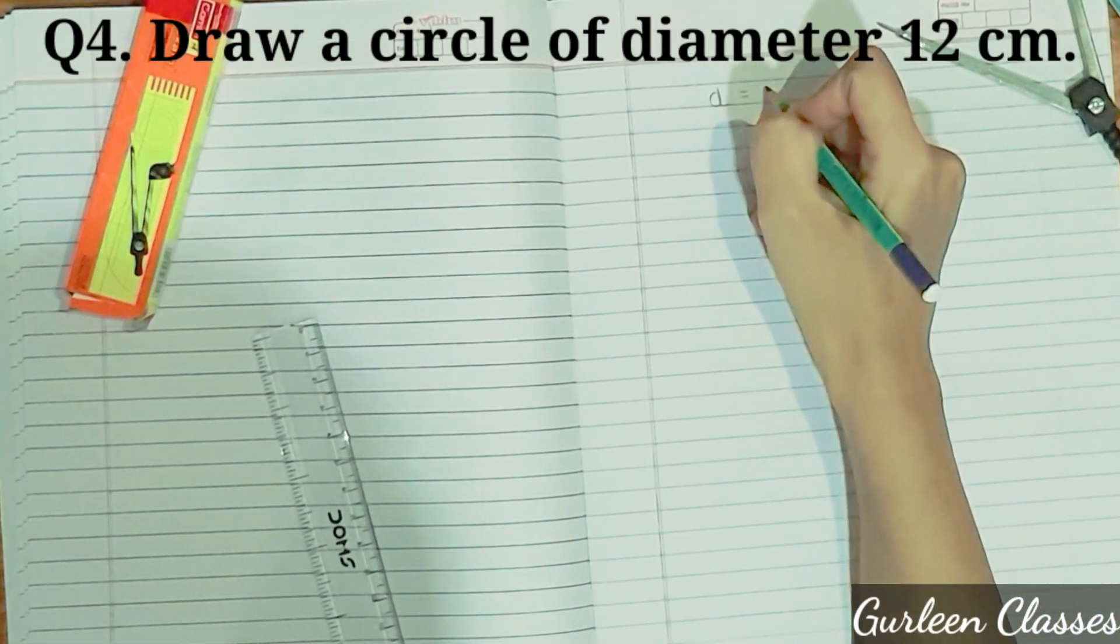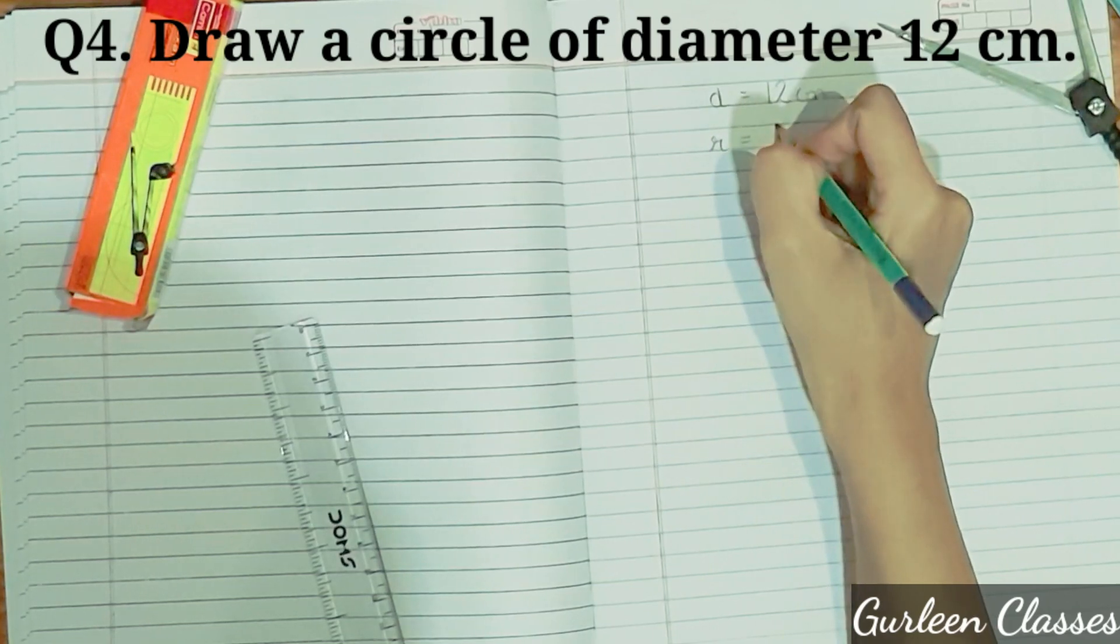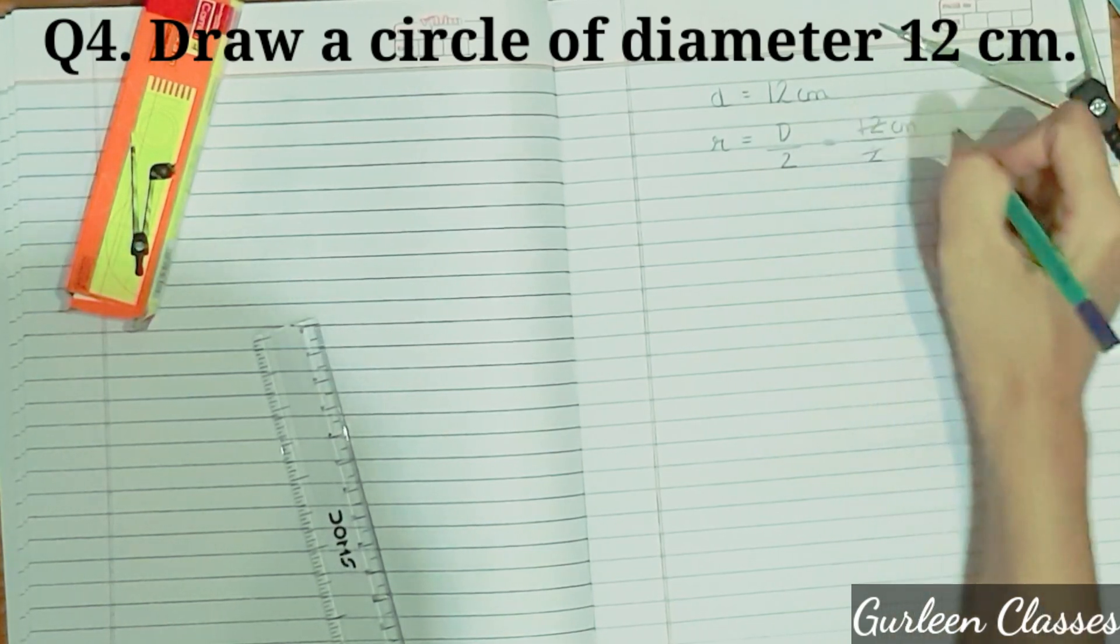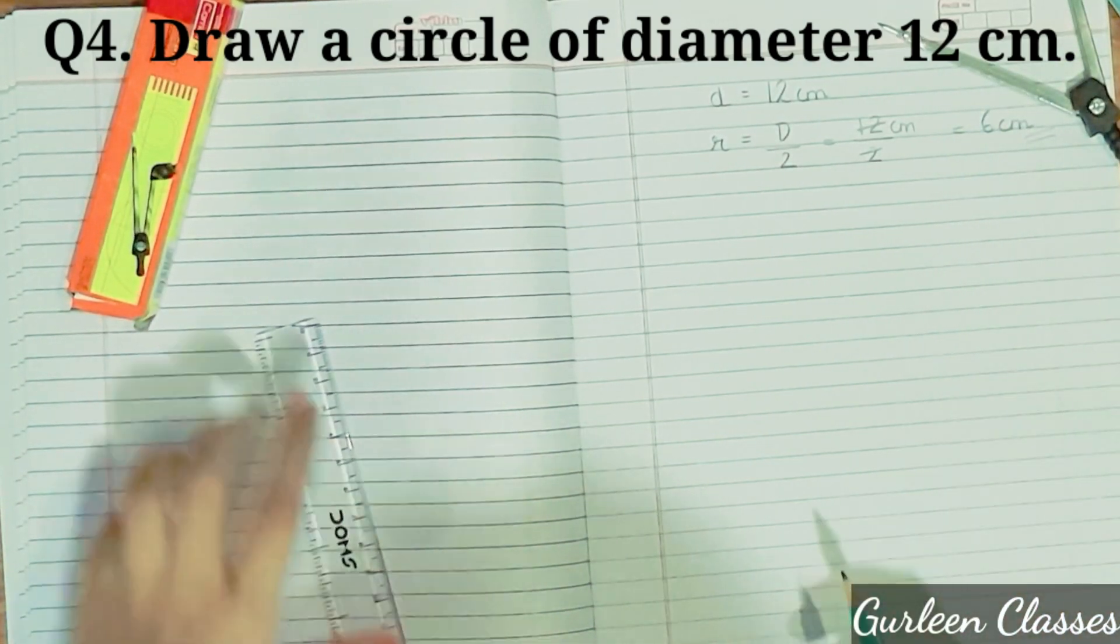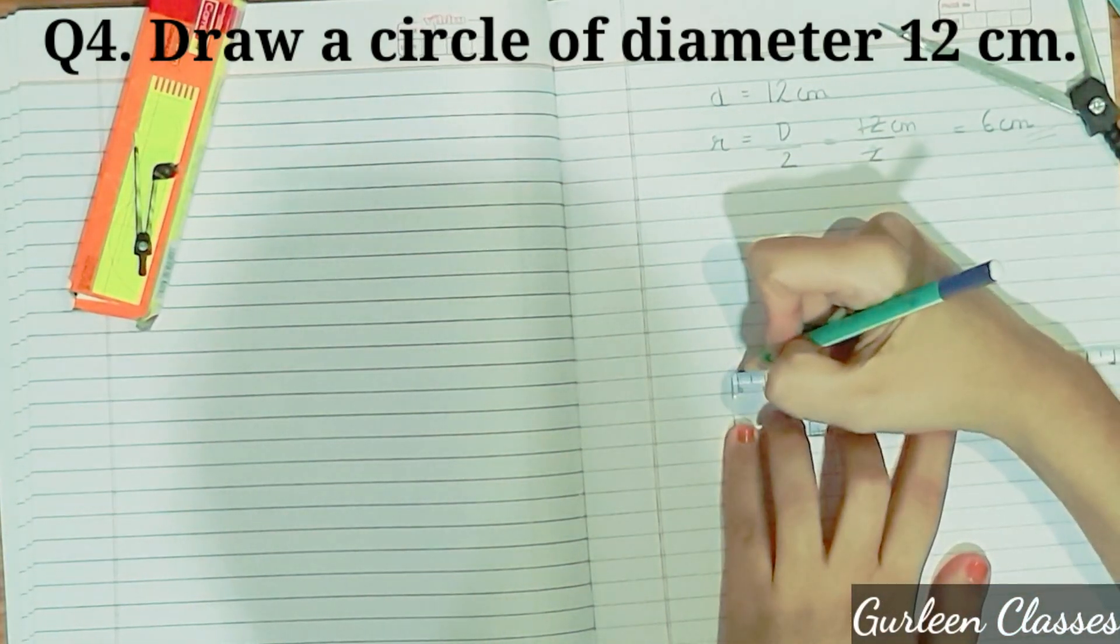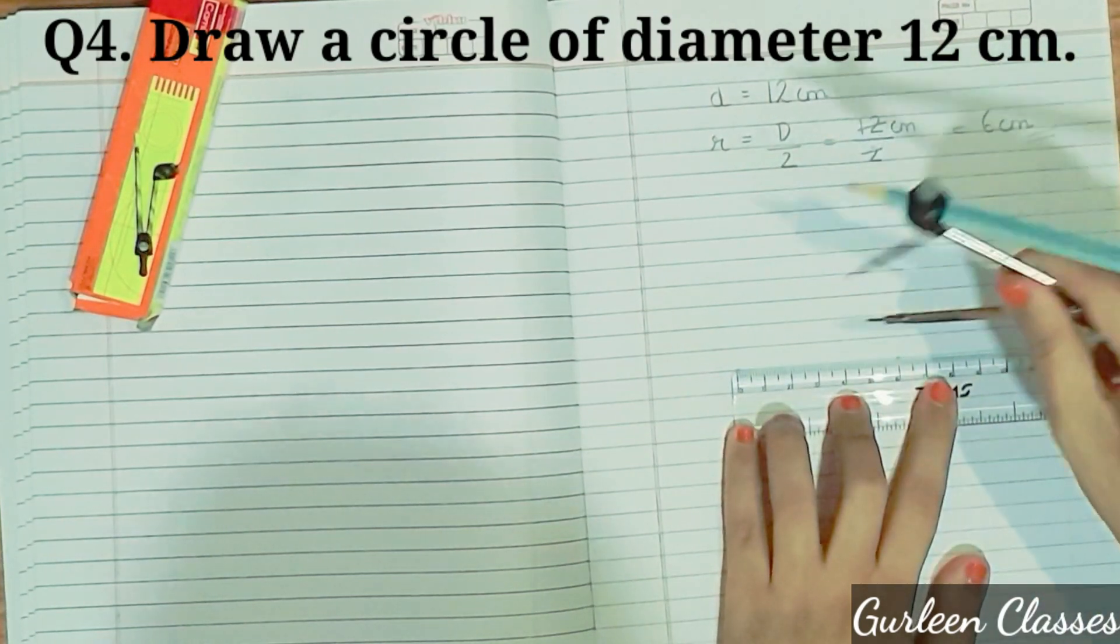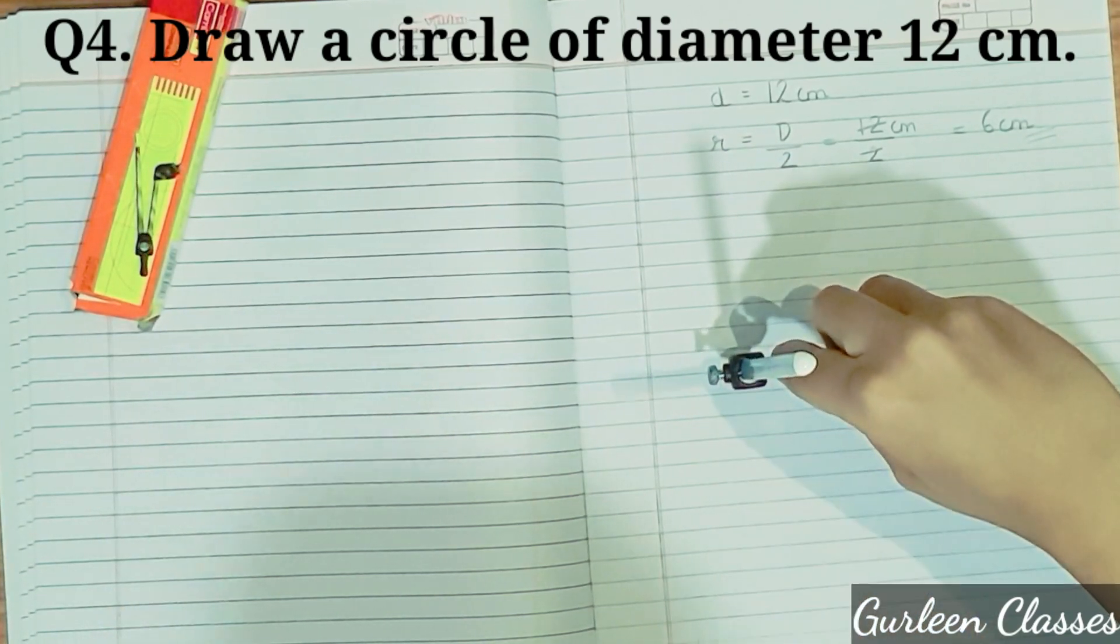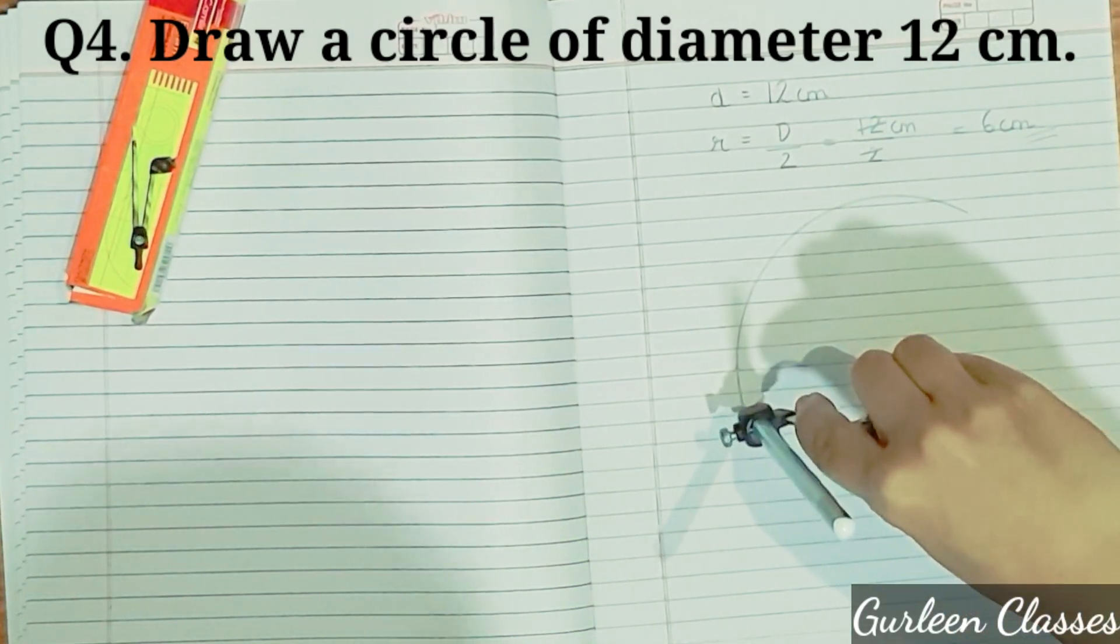Question number 4. Draw a circle of diameter 12 cm. So diameter is equal to 12 cm. Radius is equal to diameter upon 2. So 12 cm upon 2. So let us divide, it is 6 cm. So radius is equal to 6 cm, as diameter is just double. Now take a scale and mark points from 0 to 6 cm. Now take a compass and measure the length from 0 to 6 cm. Hold your compass properly. It should not move here and there. Now from center, draw a circle of radius 6 cm.